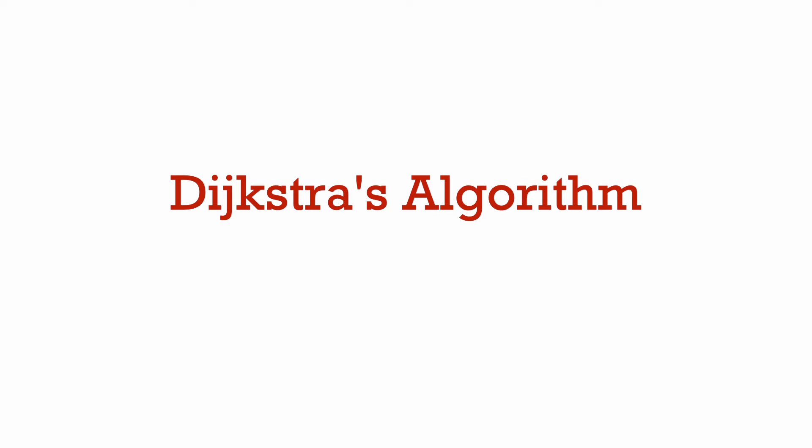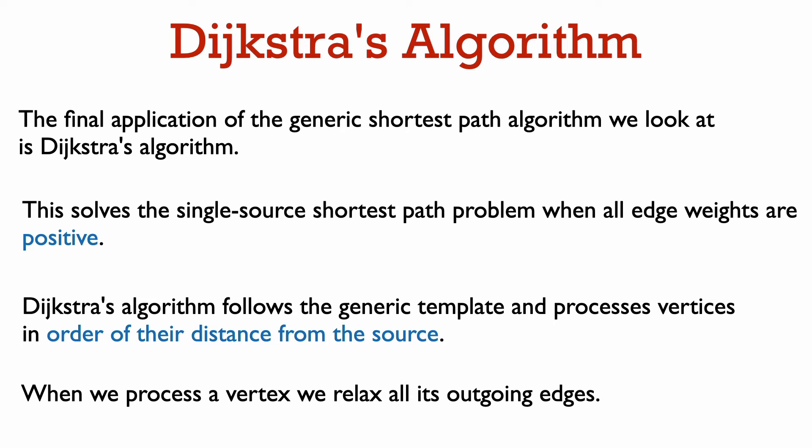Our final example of instantiating the generic shortest path algorithm template is Dijkstra's algorithm. Dijkstra's algorithm solves the single source shortest path problem in a weighted and directed graph when all edge weights are positive. The key idea in Dijkstra's algorithm is to process vertices in order of their distance from the source vertex. By process a vertex, I mean relax all its outgoing edges.